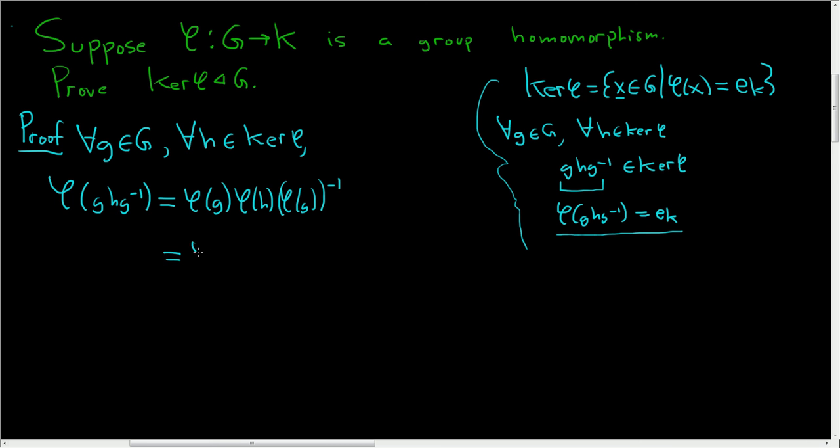This is equal to phi of g. H is in the kernel of phi. So phi takes h to the identity element in K, and here we still have the phi of g inverse.